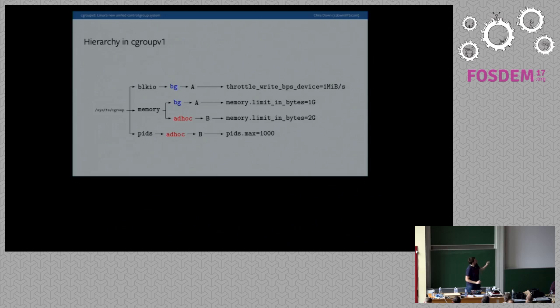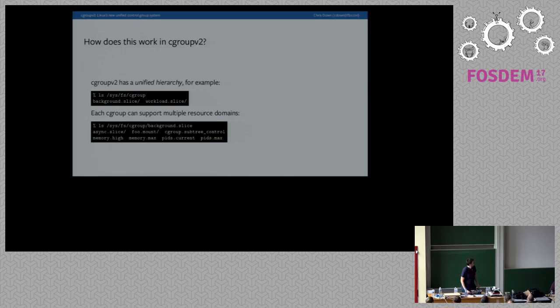Here is a concrete look at how this looks in cgroup v1. You have sysfs cgroup, then the resources — blkio, memory, and pids — and then the cgroup names. We have nested cgroups here: A inside BG for two resources, and B inside adhoc for two resources. Just to reiterate, because it's really important: from the kernel's perspective, naming has no meaning. If it's in a different resource, even if it has the same name, it has no meaning. And that has all sorts of weird implications.